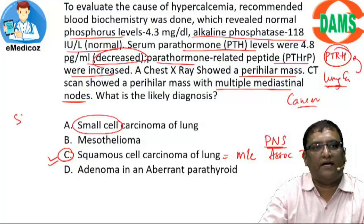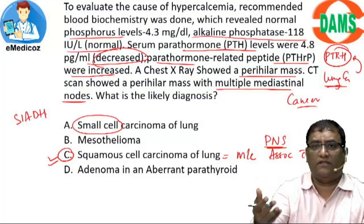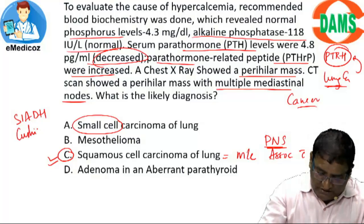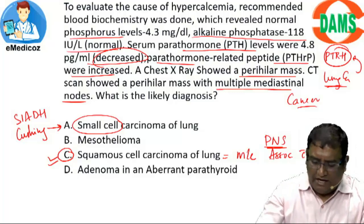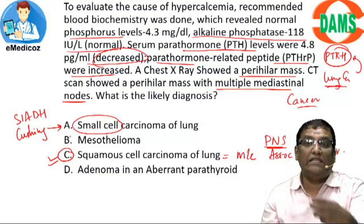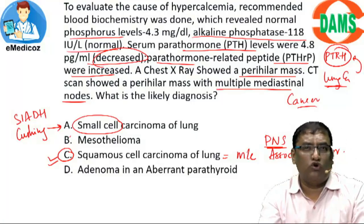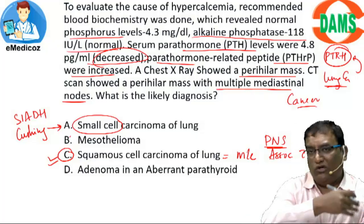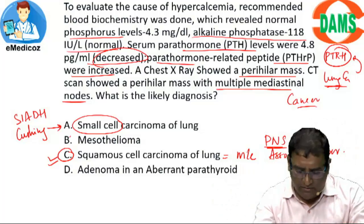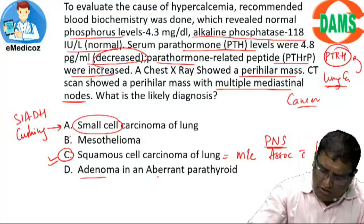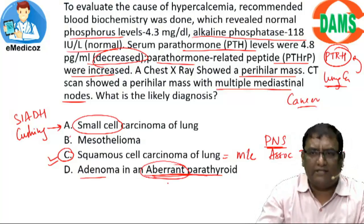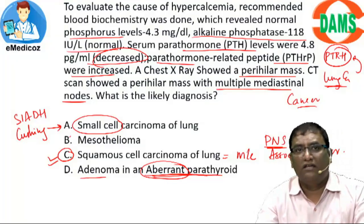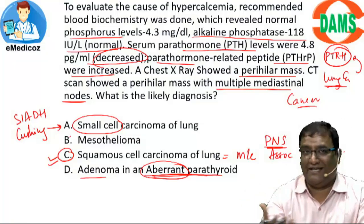If it were small cell carcinoma of lung, the paraneoplastic syndrome would have been SIADH — manifesting as hyponatremia — or Cushing's syndrome. I would not suspect mesothelioma because the mass should have been in the pleura rather than the lung, and there should be a strong history of asbestos exposure — shipyard workers, navy workers — which is not the case here. For adenoma of aberrant parathyroid: aberrant means an abnormal parathyroid in the thorax, which is very rare, and anyway parathormone should have been elevated — but it is decreased, so that option is ruled out.